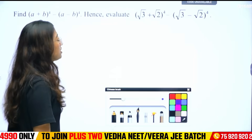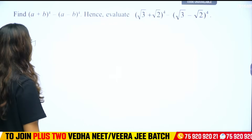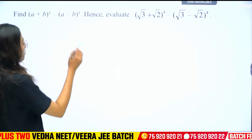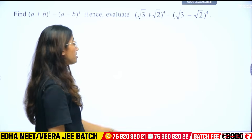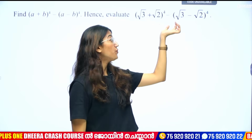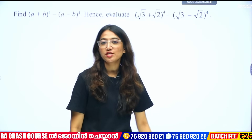This question is: (a + b) all raised to 4 minus (a - b) all raised to 4. Put that as (√3 + √2) all raised to 4 minus (√3 - √2) all raised to 4. Expand.